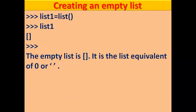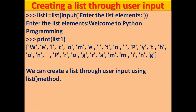Next example: creating an empty list. You set list1 equal to list() — the list function with no sequence passed. When you print list1, you will have an empty list, because no sequence was passed to the list function.